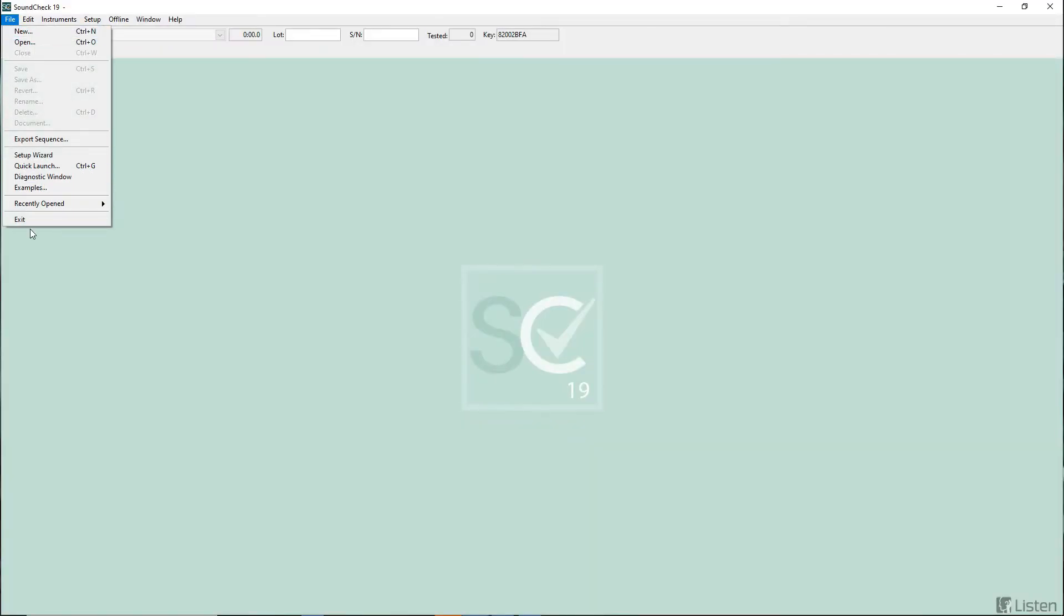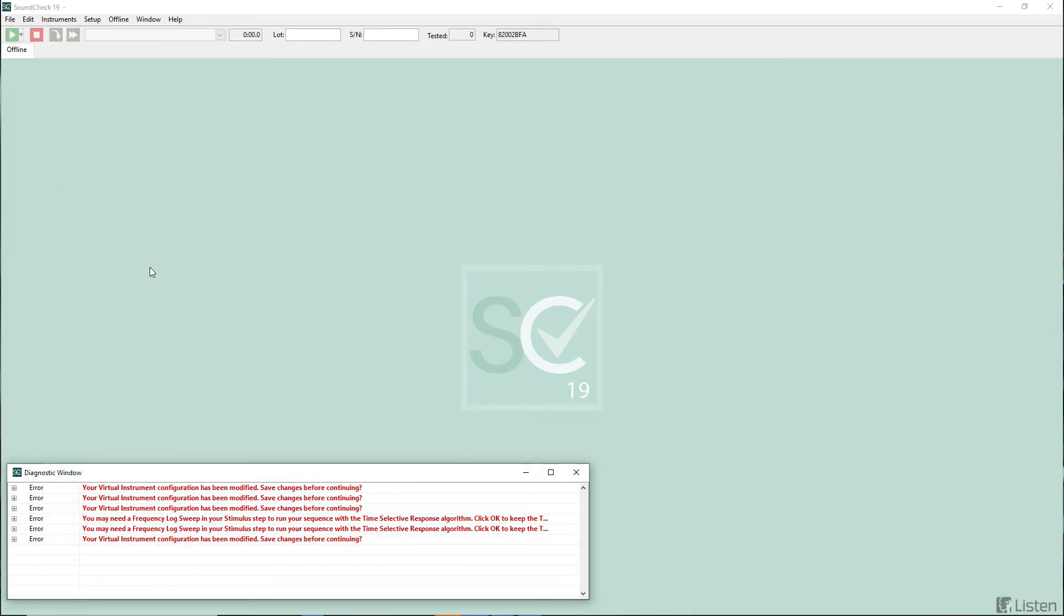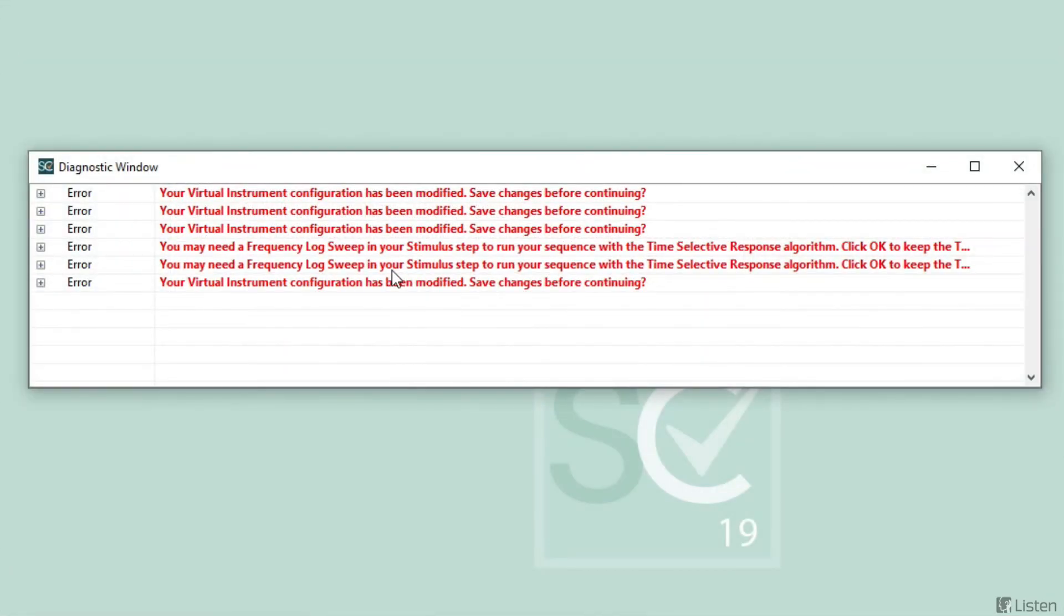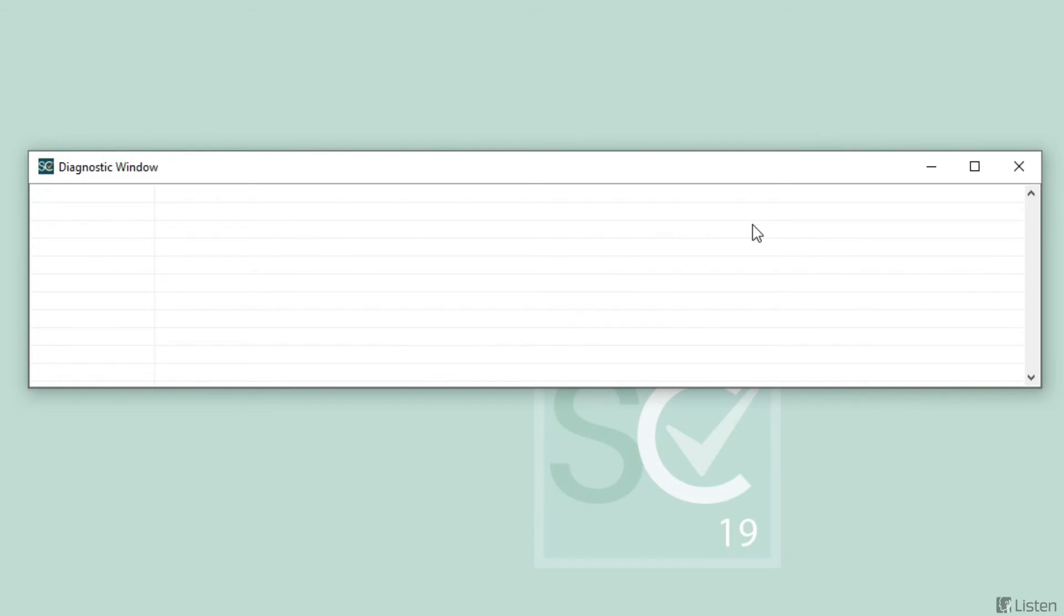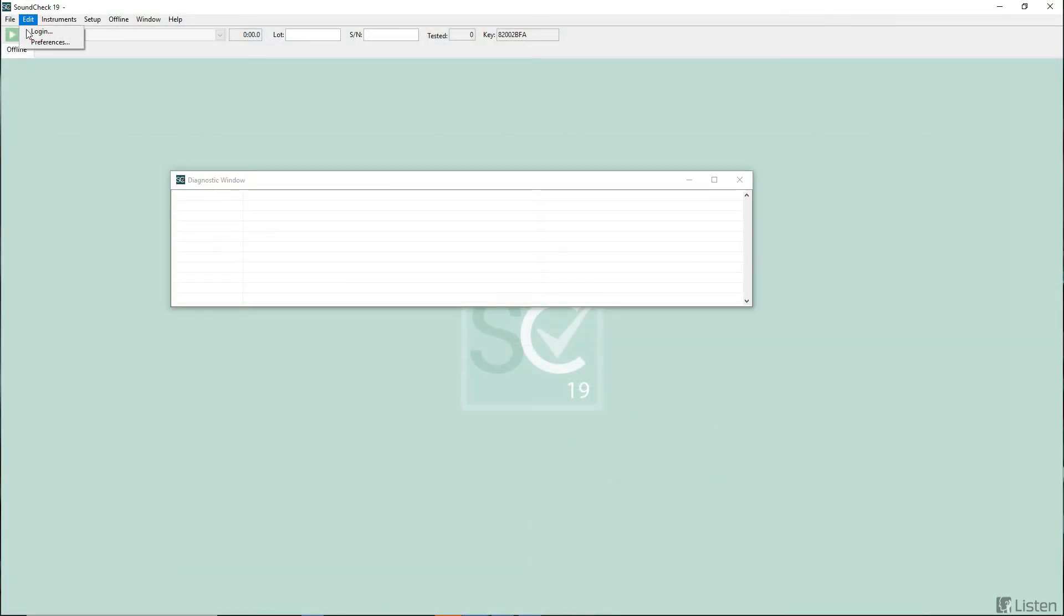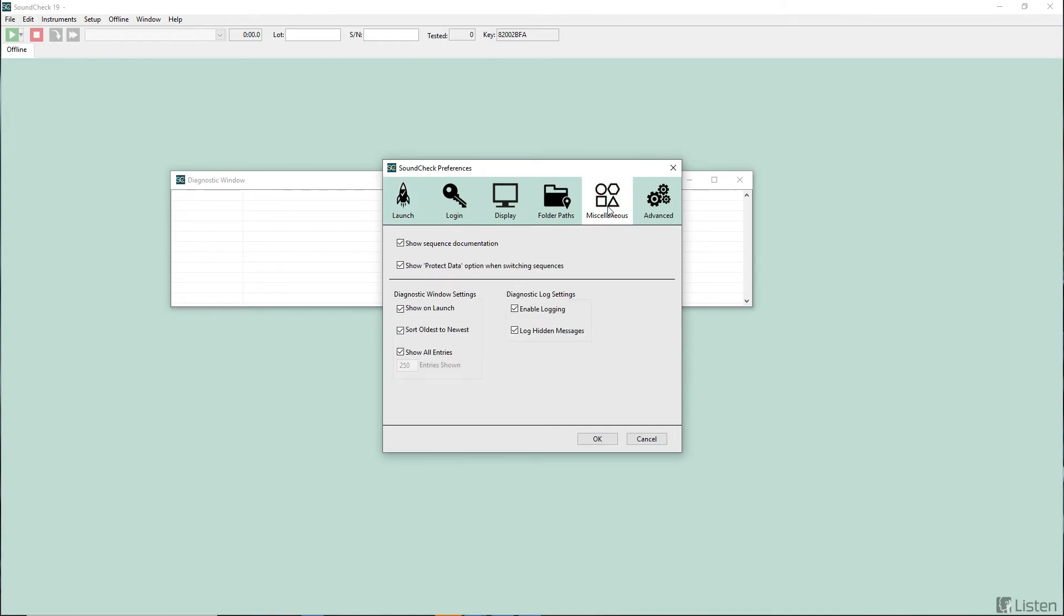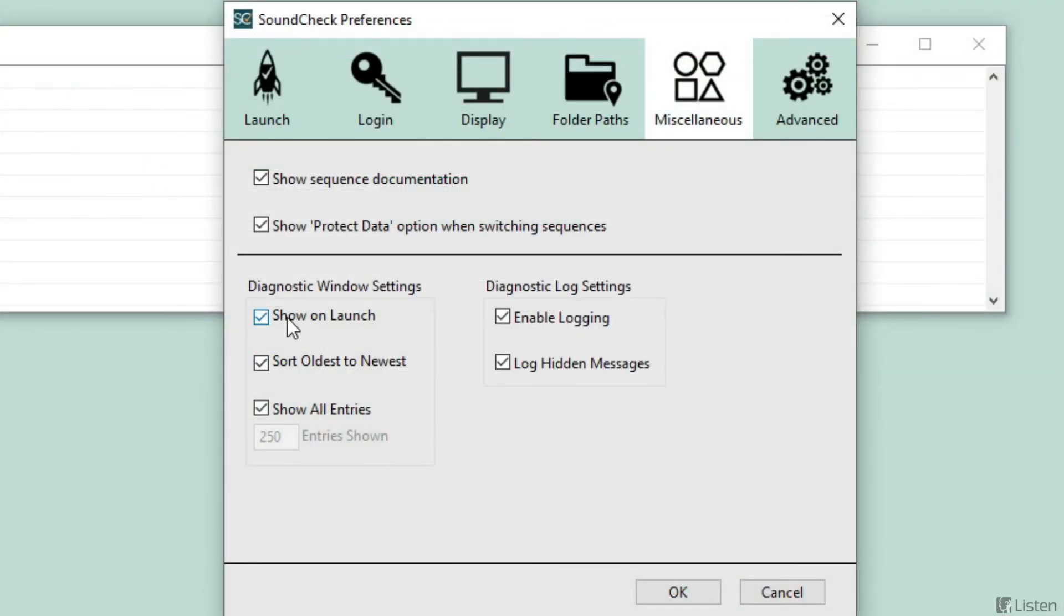You can open the diagnostic window from the file menu in Soundcheck. As you see here, I have a few errors. I could decide what I want to display or hide. So if I did not want to look at errors, I could hide all of those and just log info and warnings. Settings for the diagnostic window is found in the preferences window. If I go to the miscellaneous tab, I could decide whether I want the diagnostic to automatically open at launch. I could sort the order as well as show how many entries I want to see. I could choose whether I want to create a text log of the diagnostic window.